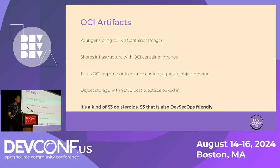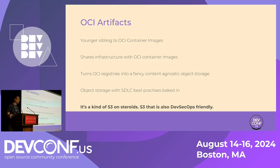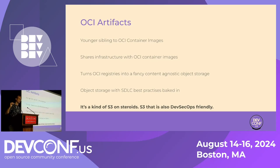The solution I choose for this is OCI artifacts. Whoever has worked with OCI artifacts? Good portion of the audience. It's just a younger sibling to OCI container images — same infrastructure, same formats, slight tweaks here and there. But what it actually does from an end-user point of view is turn magical OCI container registries into a very accessible, approachable, content-agnostic object storage with all the additional software development lifecycle goodies on top. Kind of S3 on steroids, that is DevSecOps friendly — and I think that's what we need here.